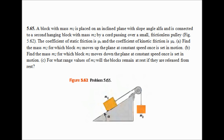Part A: Find the mass M2 for which the block M1 moves up the plane at constant speed once it's set in motion. Part B: Find the mass M2 for which the block M1 moves down the plane at constant speed once it's set in motion. Part C: For what range of values of M2 will the block remain at rest if they are released from rest?